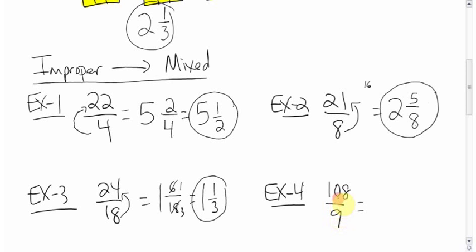Wait a minute, 9 can also go into 18. It shouldn't take you too long to realize that 9 goes into 108 12 times. 9 times 12 is 108. So there's nothing left over.